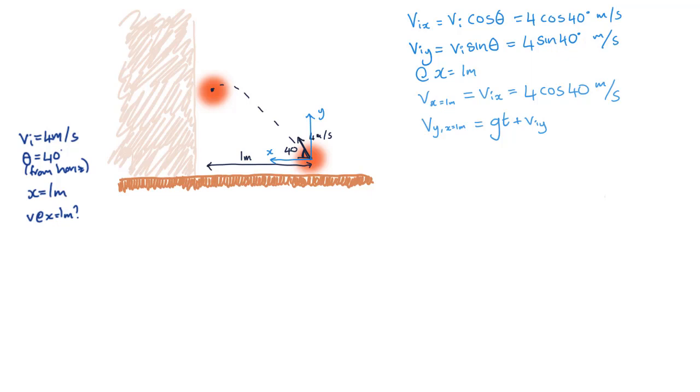Before we add the vertical and horizontal components together, we need to figure out what T is. This is fairly easy to work out from the horizontal motion. Since the horizontal velocity is constant, the horizontal distance x is equal to Vix times T, which we can rearrange to find T. Now we can substitute this into our expression for the final vertical velocity.